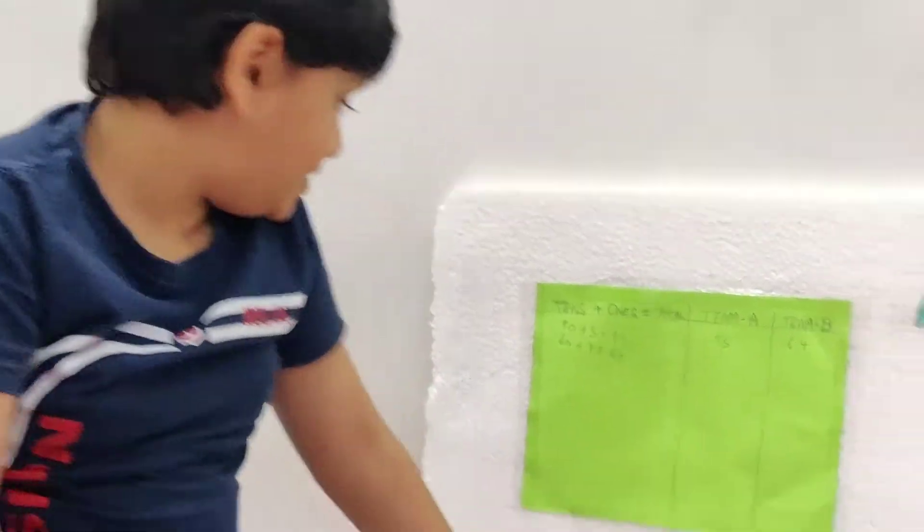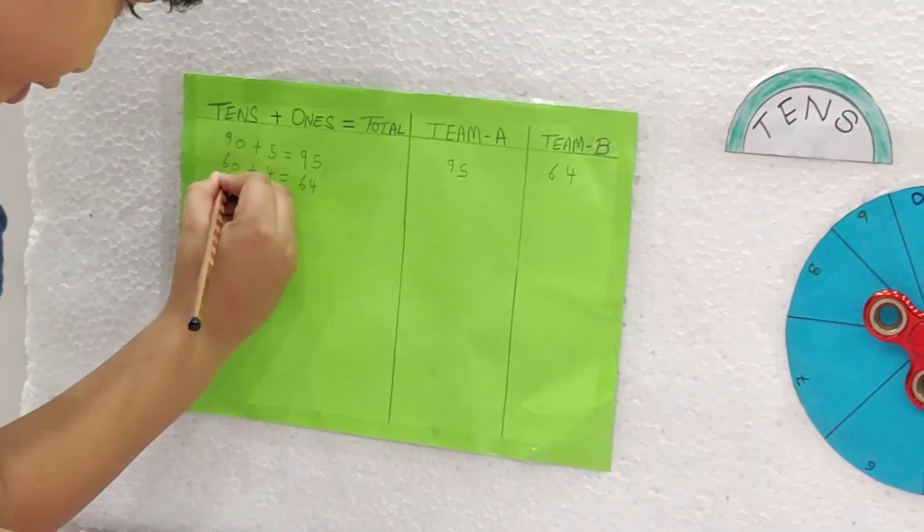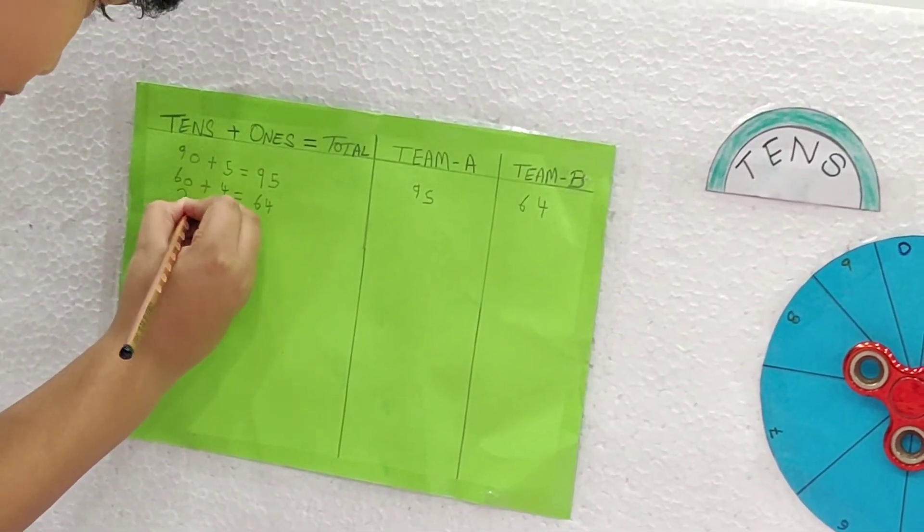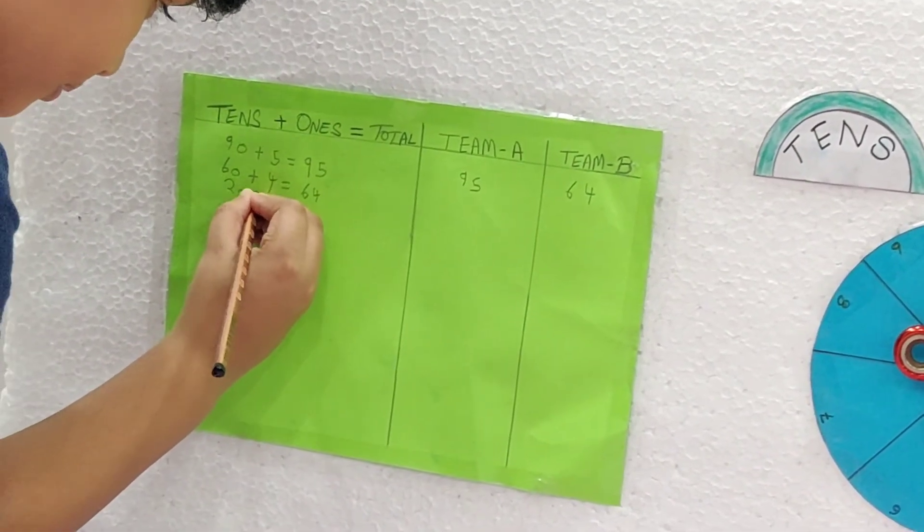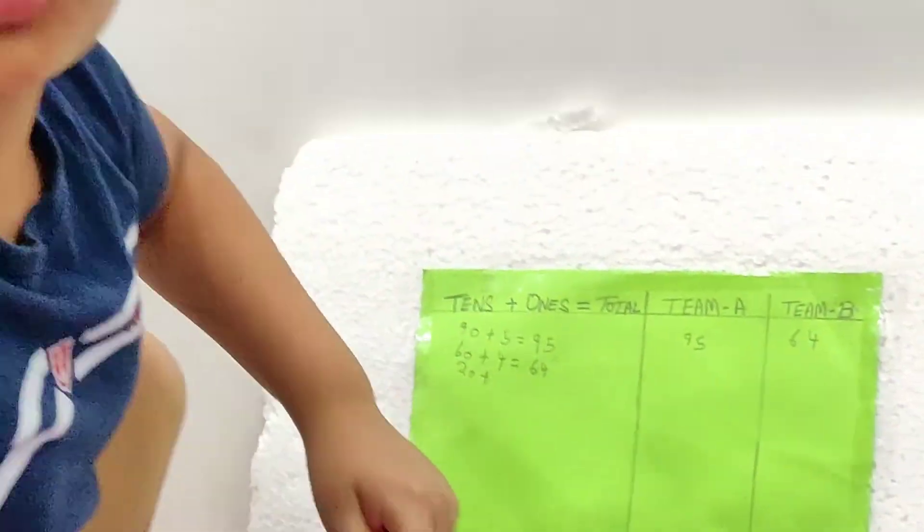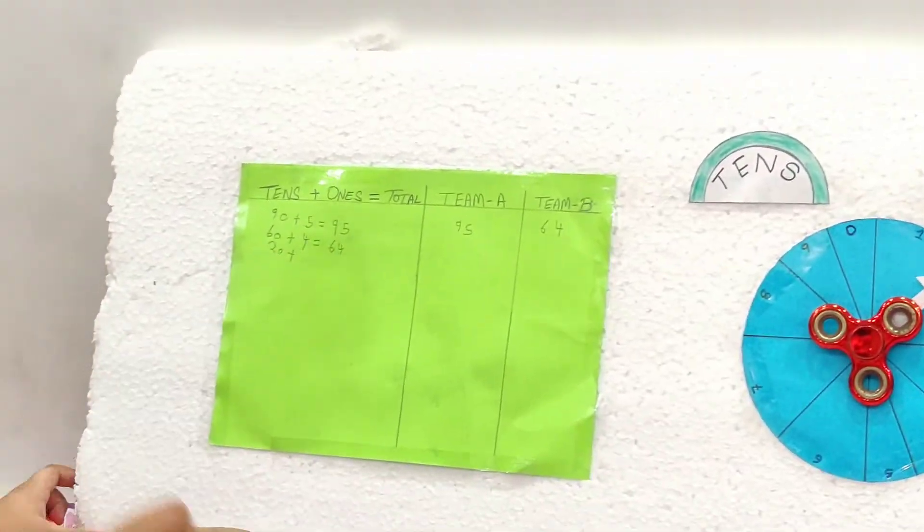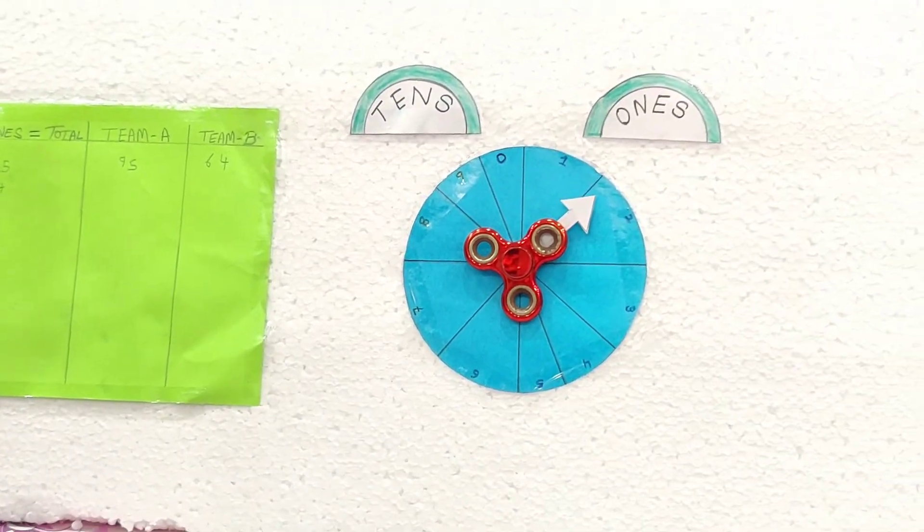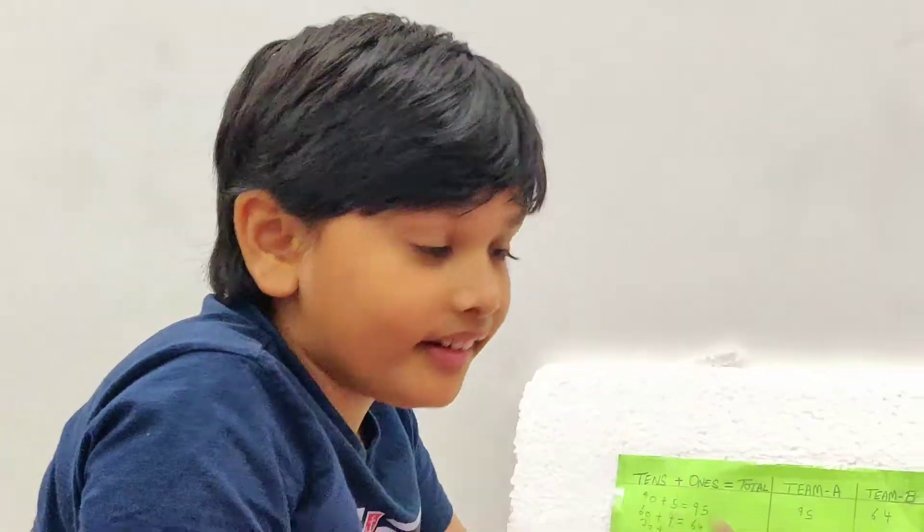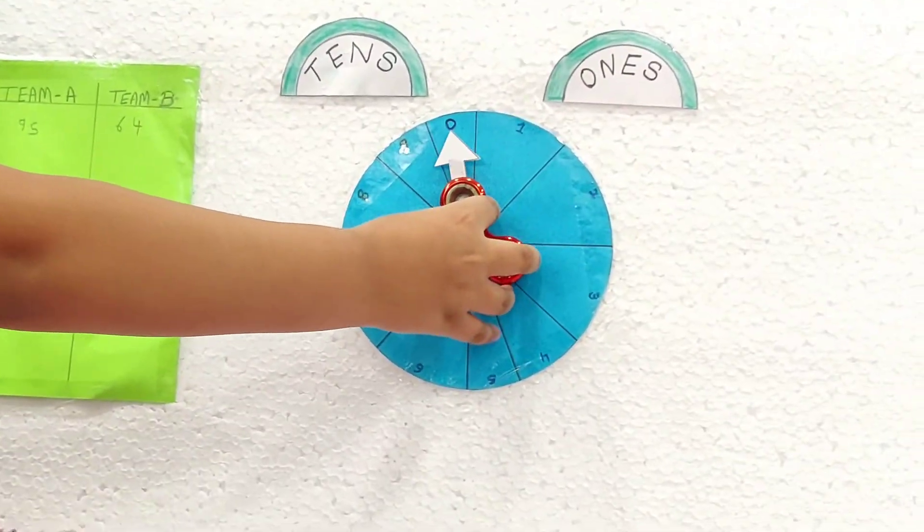We got 2. It's very low. So it is 20 plus. It is 20. And we will do the plus sign also. Now of course, we have to spin the wheel again.